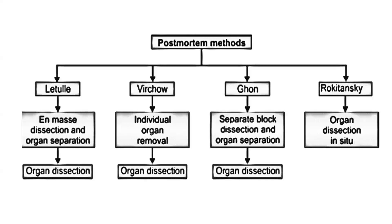Let us revise. In the technique of Lottel: en-masse dissection, organ separation, then dissection. In Virchow: individual organ removal one by one, then organ dissection. In Ghon: separate block dissection, organ separation, then organ dissection. In Rokitansky: organs dissected in-situ. These are the post-mortem methods, or methods of evisceration, or autopsy techniques.